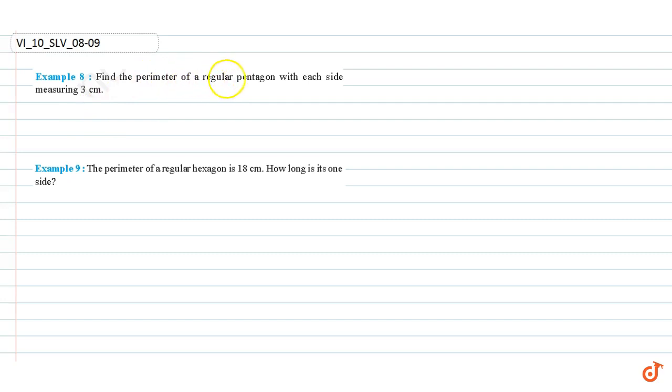Example 8: Find the perimeter of a regular pentagon with each side measuring 3 cm.